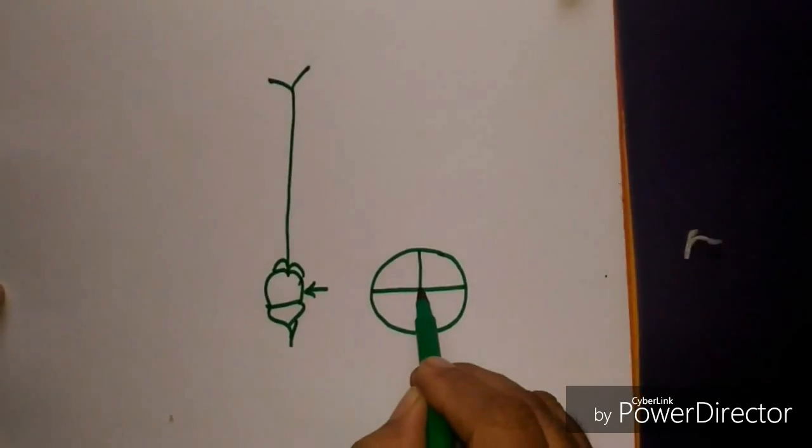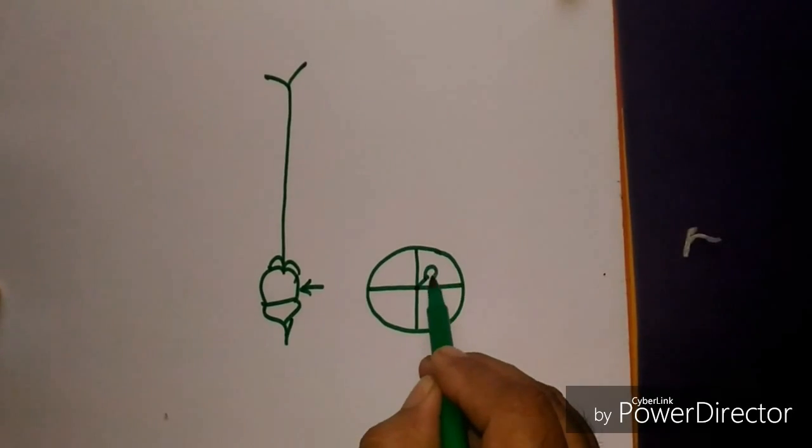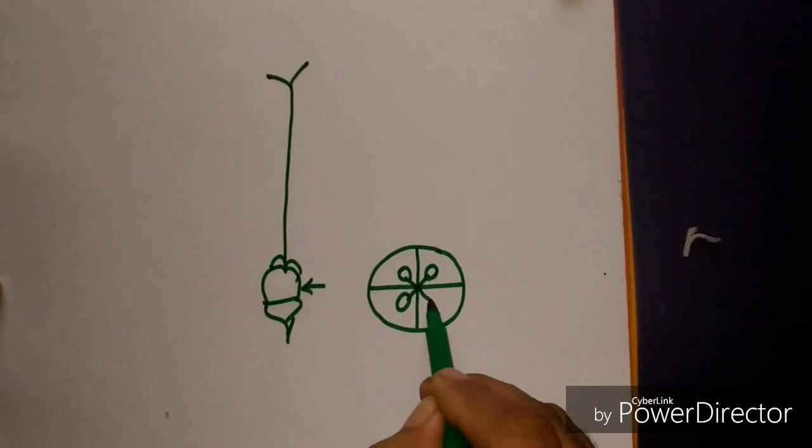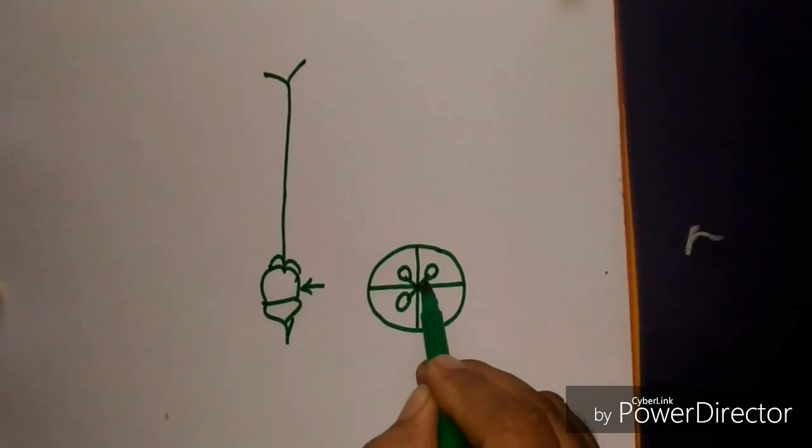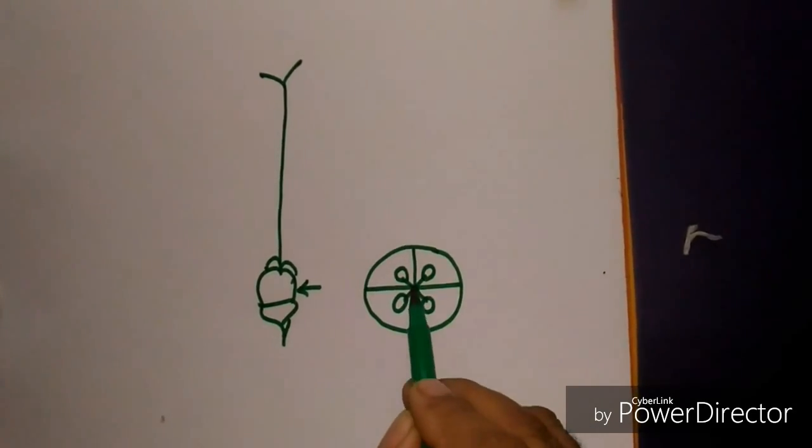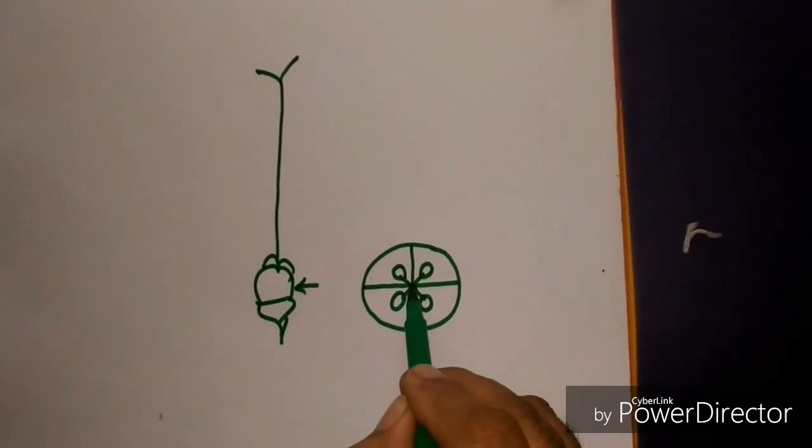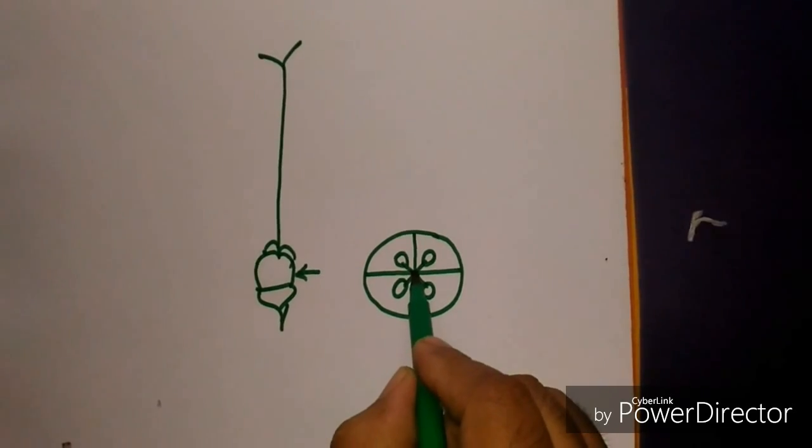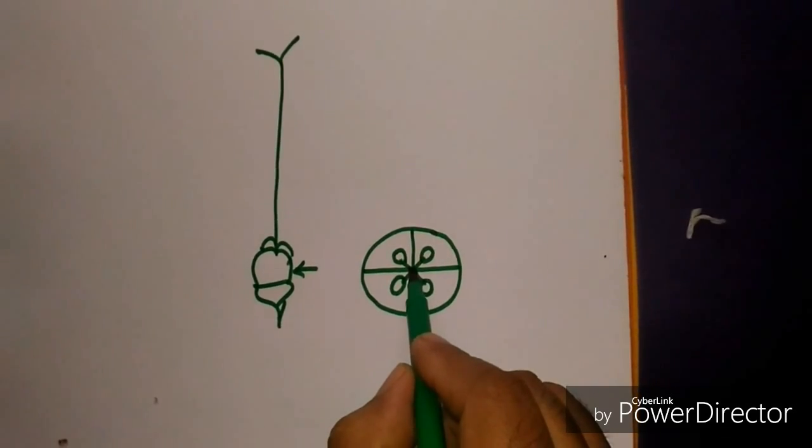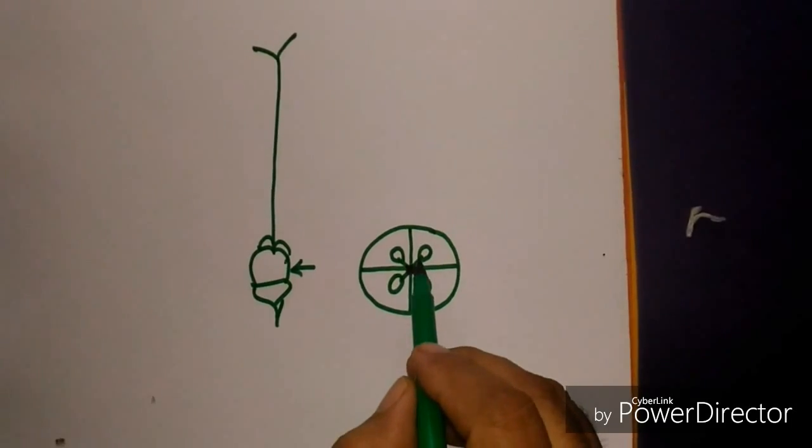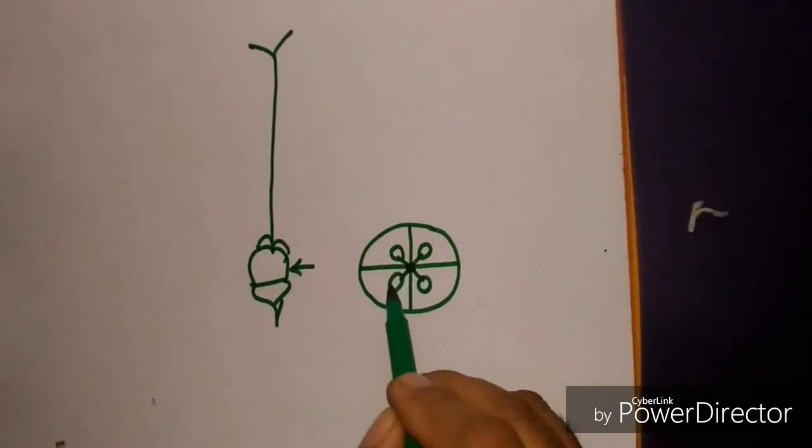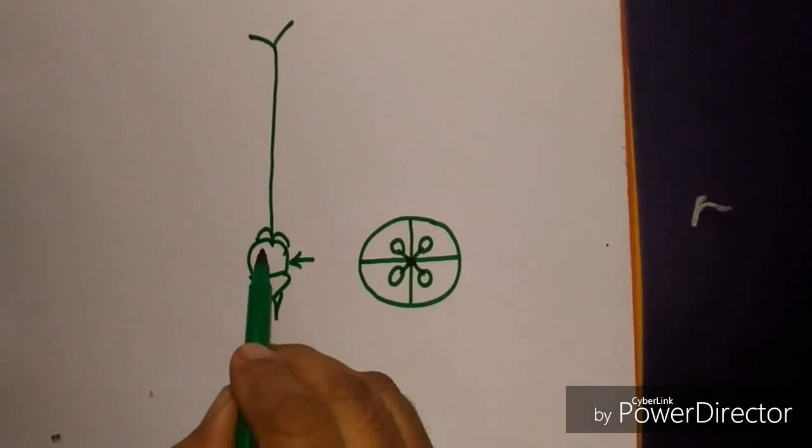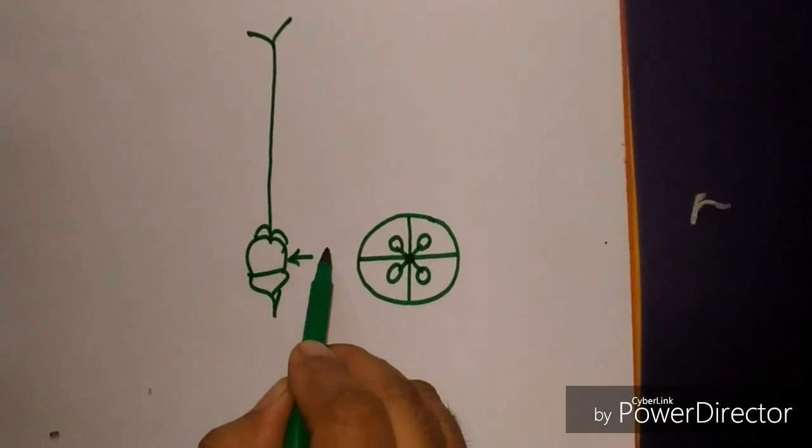And this is the axis and placentation is axile. Why axile? Because the ovules they appear from the axle of the ovary chamber. And in each chamber there will be only one ovule and it is ovary.